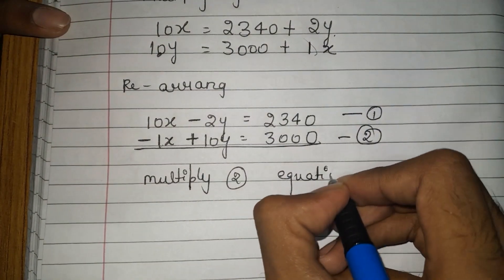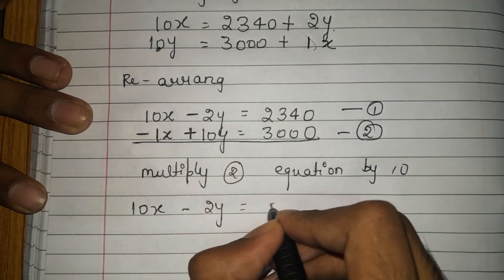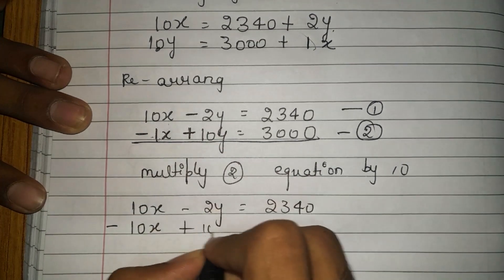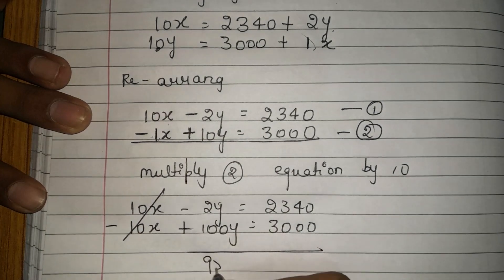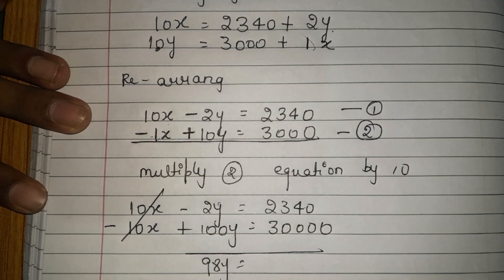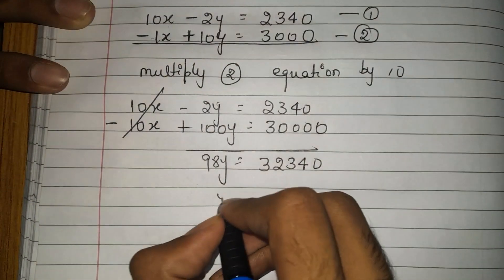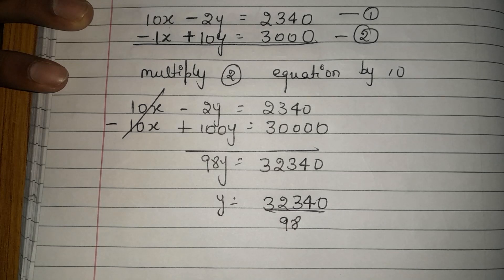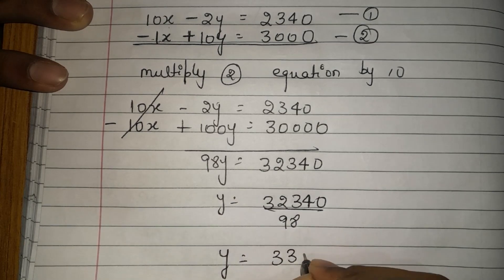The first equation remains the same. The second equation becomes: −10x + 100y = 30000. Adding the two equations, x cancels out. 100 − 2 = 98, so 98y = 30000 + 2340 = 32340. Therefore y = 32340 ÷ 98 = 330 rupees.